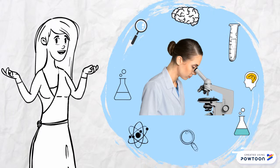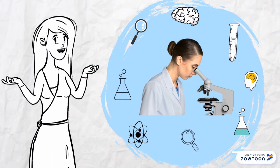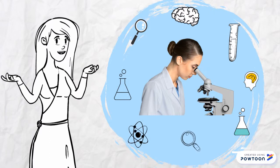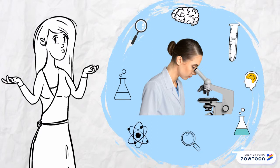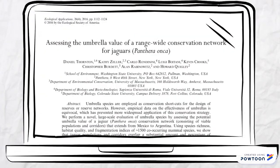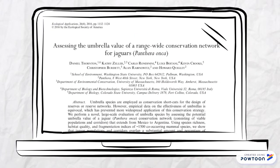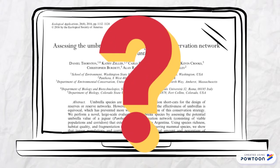However, many scientists and authors in the past years have been trying to assess the empirical validation of this concept, and this is exactly what we are going to talk about. One article that really caught our attention and that we are going to analyze in depth is the one from Thornton and others, called 'Assessing the Umbrella Value of a Range-Wide Conservation Network for Jaguars.' This paper tries to find an answer to the queries regarding the uncertainty surrounding the umbrella species strategies.